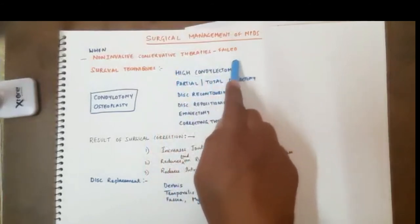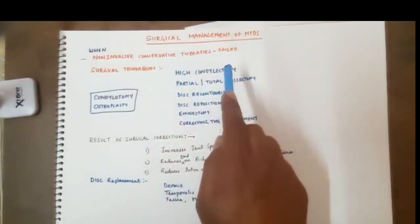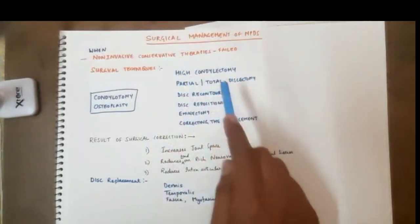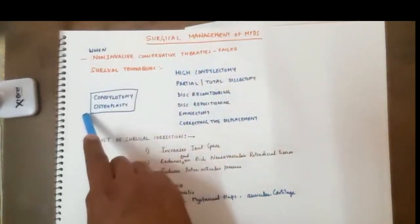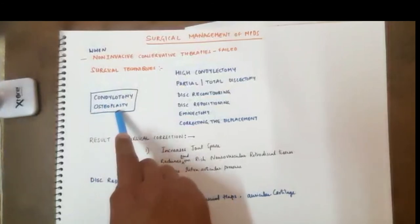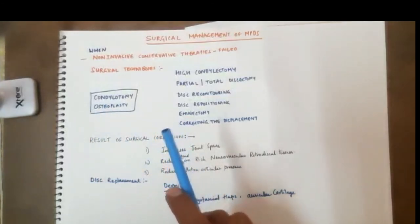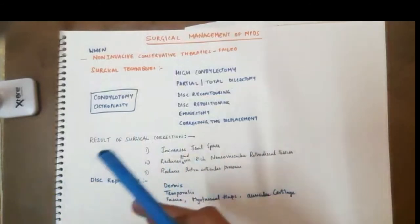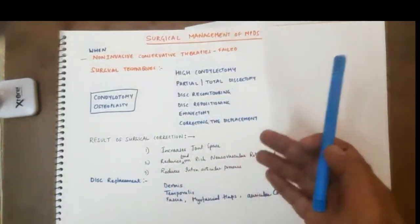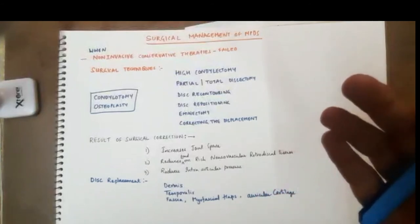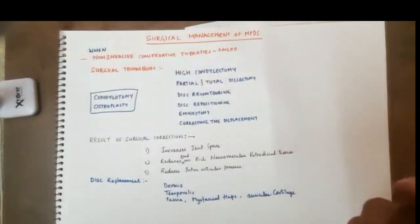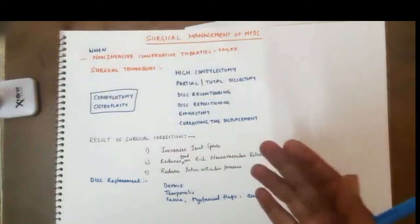So what you do is you prefer a high condylectomy. This has got high success rate, basically high condylectomy, or condylotomy and osteoplasty. These things have high success rate. At least for a few years patient will be comfortable. There are certain recurrent cases or intractable cases where once you enter and do the surgery, the things get worsened.